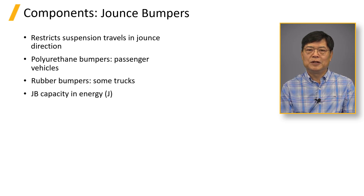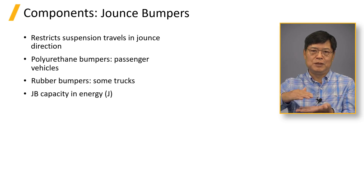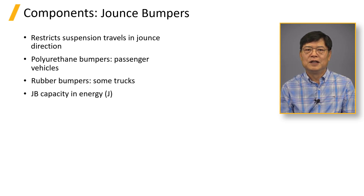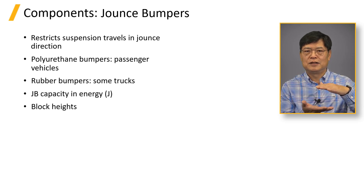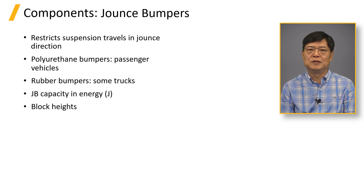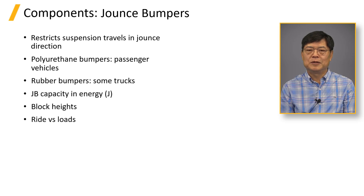The polyurethane bumper can be deflected up to 80% of its undeformed length. The fully compressed length to keep the suspension travel at MEJ is called block height. The energy absorbed at the block height is one of the jounce bumper characteristics. The energy is calculated by the area under the force versus deflection curve. The jounce bumper design is a compromise between ride and load. Ride engineers pursue longer jounce free travel and soft entry feel, which generates high load.